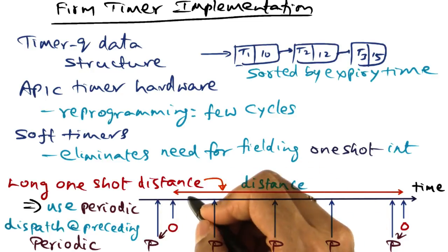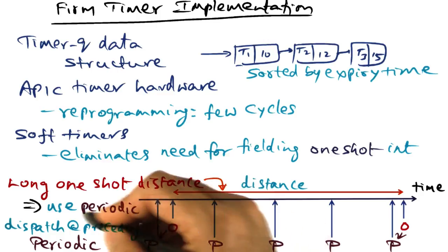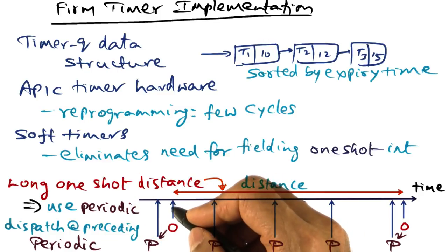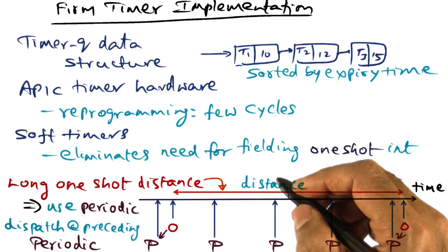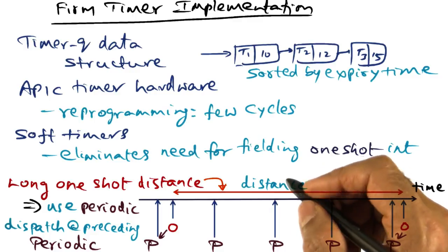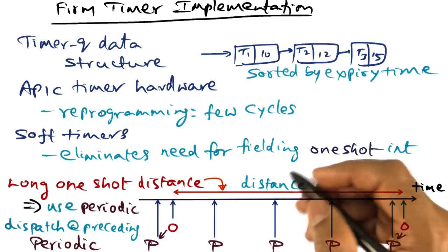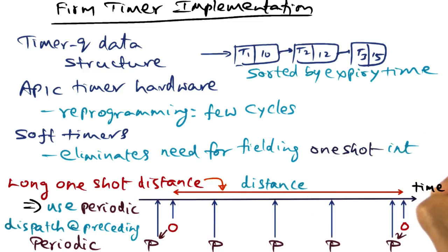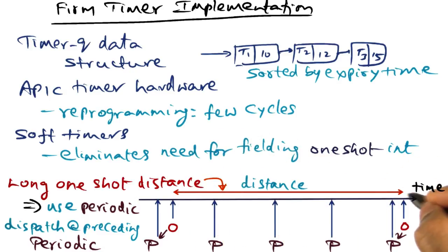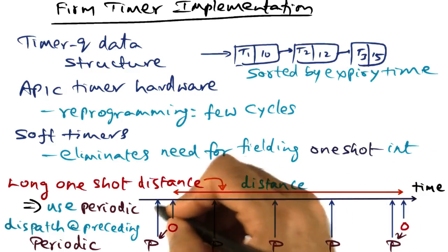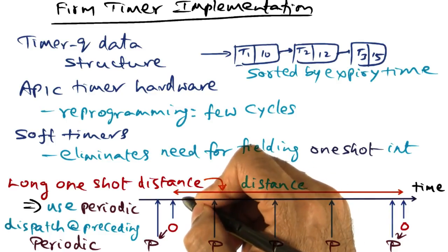The reasons for doing that are twofold. One is periodic event data structures are much more efficient in the kernel - they are order of one data structures, whereas the one-shot event programming data structures in the kernel tend to be order of log n, where n is the number of active timers. So as an optimization, if the one-shot events happen at fairly long distances with several periodic events going to happen anyhow within that, we will simply use the periodic timers instead.